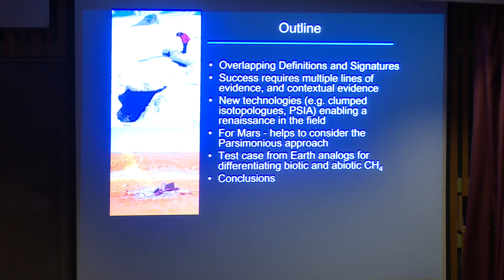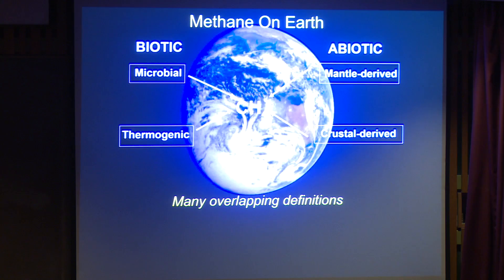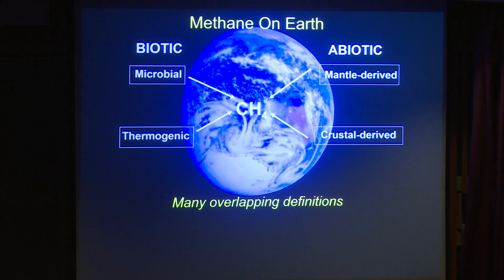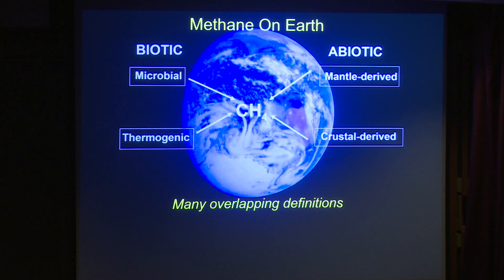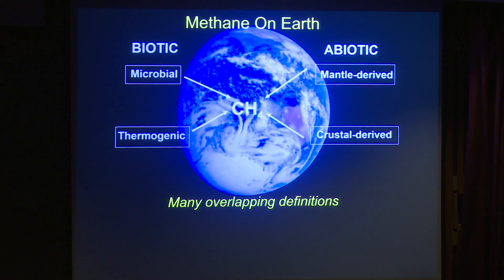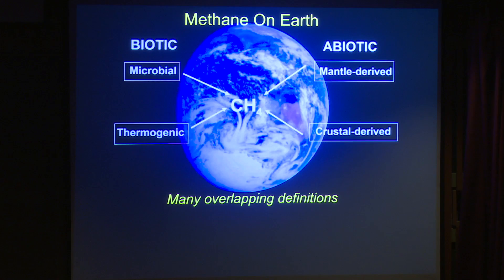I want to start with some definitions, because some early problems still arise from differences in terminology. What I've tried to do is pull together the consensus definitions that emerged amongst people studying methane on Earth over the last 20 years or so. The consensus is to consider both methane produced by microbes and methane produced by thermogenic processes — thermal alteration of high molecular weight organic material — as both biotic in origin, since the carbon source in both cases is originally derived from life.